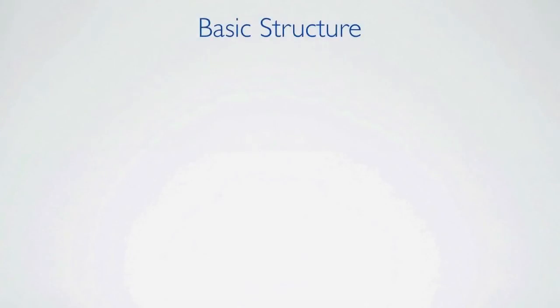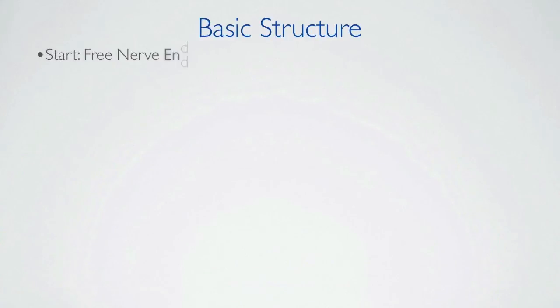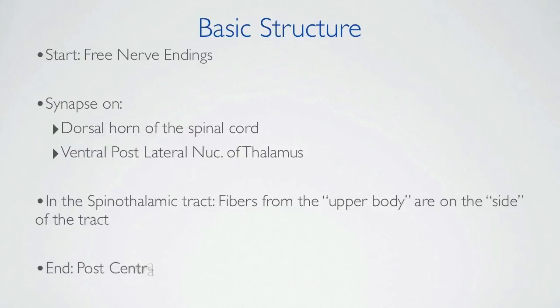Things to remember. The lateral spinothalamic tract is involved in the transmission of protopathic pain and temperature. There are three synaptic levels. At the dorsal horn of the spinal cord, in the thalamus, mostly in the ventral post-lateral nucleus of the thalamus, and in the post-central gyrus.